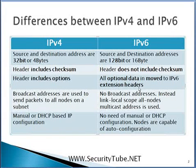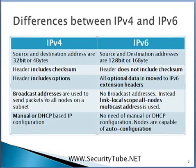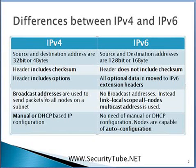IPv4 machines use a broadcast address to send packets to all nodes on a subnet or link. Instead of broadcasting in IPv6, a link-local scoped all-nodes multicast address is defined. When any node wants to send a packet to all other nodes on the subnet, it uses the link-local scope all-nodes multicast address instead of the all-FFF broadcast address that was used in IPv4.